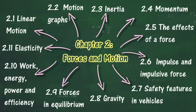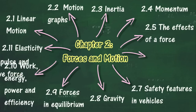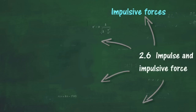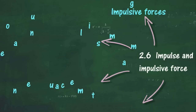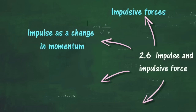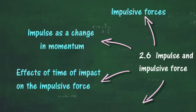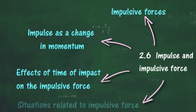In Section 2.6, we will learn about Impulse and Impulsive Force. At the end of this section, you should be able to: Explain what an impulsive force is, Give examples of situations involving impulsive forces, Define impulse as a change in momentum, Define impulsive force as the rate of change of momentum in a collision or explosion, Define the effect of increasing or decreasing time of impact on the magnitude of the impulsive force, Describe situations where an impulsive force needs to be reduced and suggest ways to reduce it, Define situations where an impulsive force is beneficial, and Solve Problems Involving Impulsive Forces.